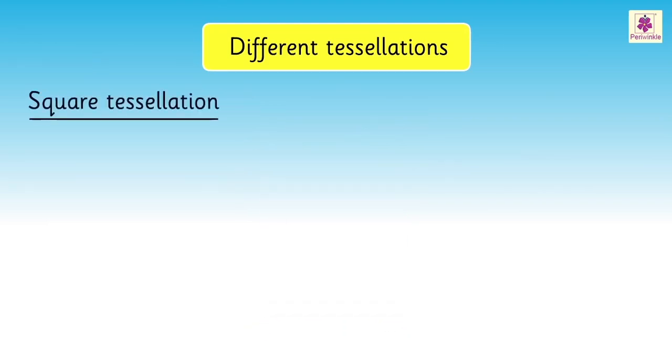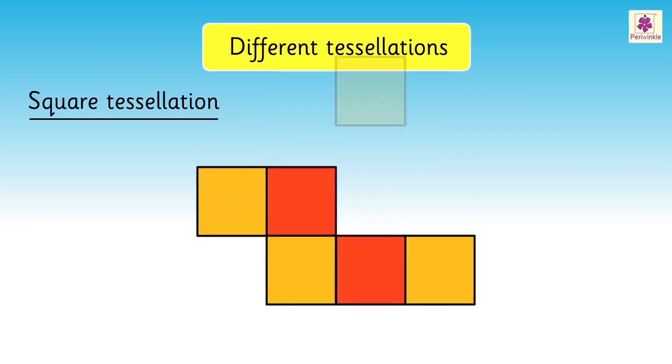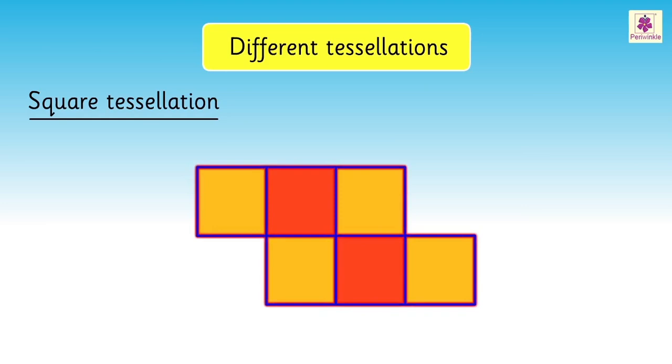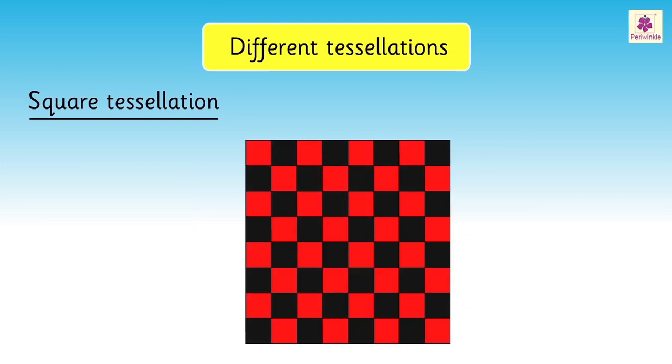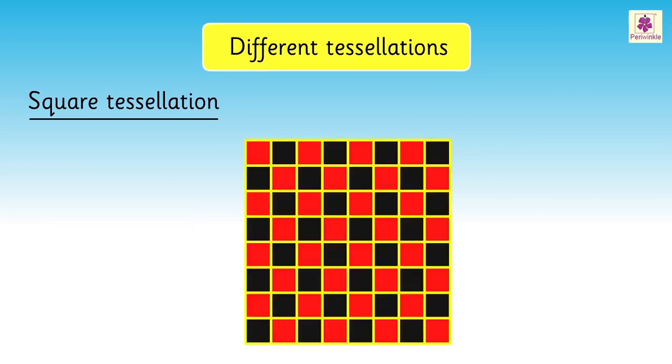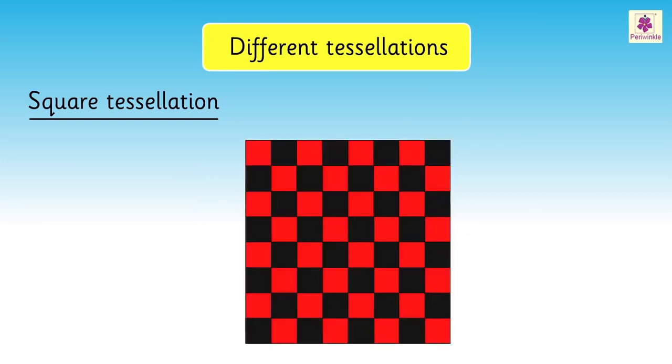Square tessellation is where squares are arranged in a pattern. The squares meet edge to edge with no gaps and no overlapping areas. Look at this checkerboard. It is made up of squares. Here, each square meets another one at the vertex.